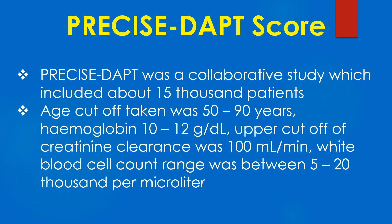PRECISE DAPT was a collaborative study which included about 15,000 patients. Age cut-off was taken as 50 to 90 years, hemoglobin 10 to 12 grams per deciliter, upper cut-off of creatinine clearance was 100 milliliters per minute, and white blood cell count range was 5 to 20,000 per microliter.